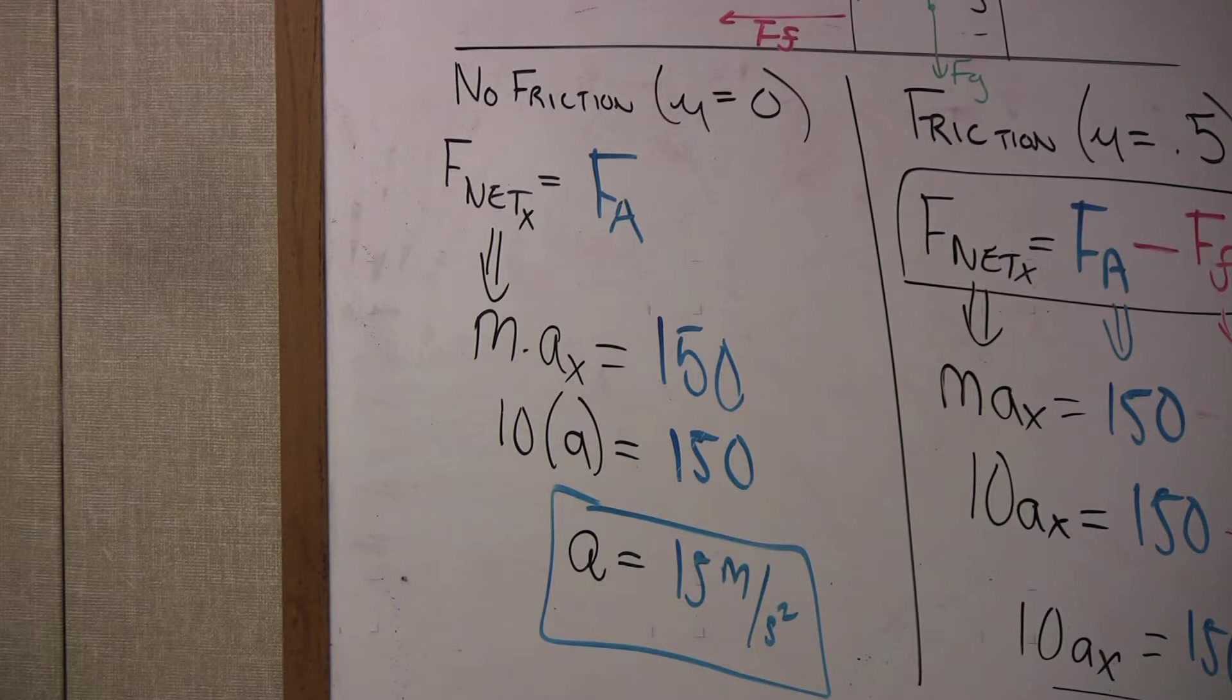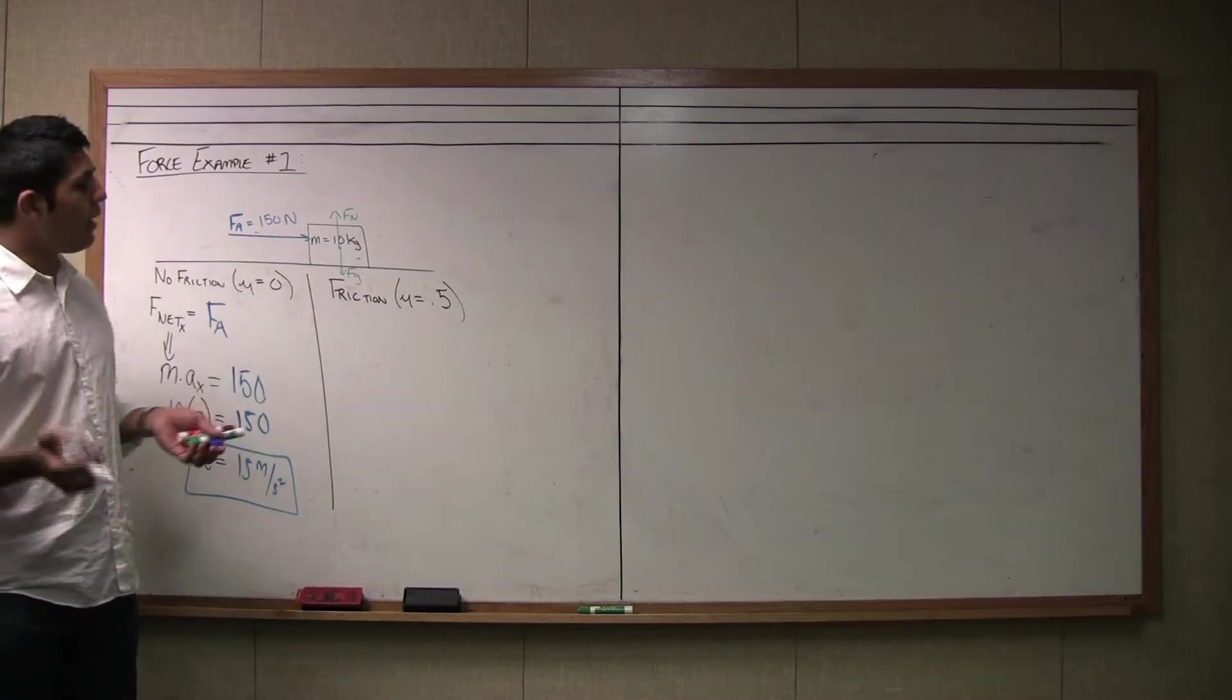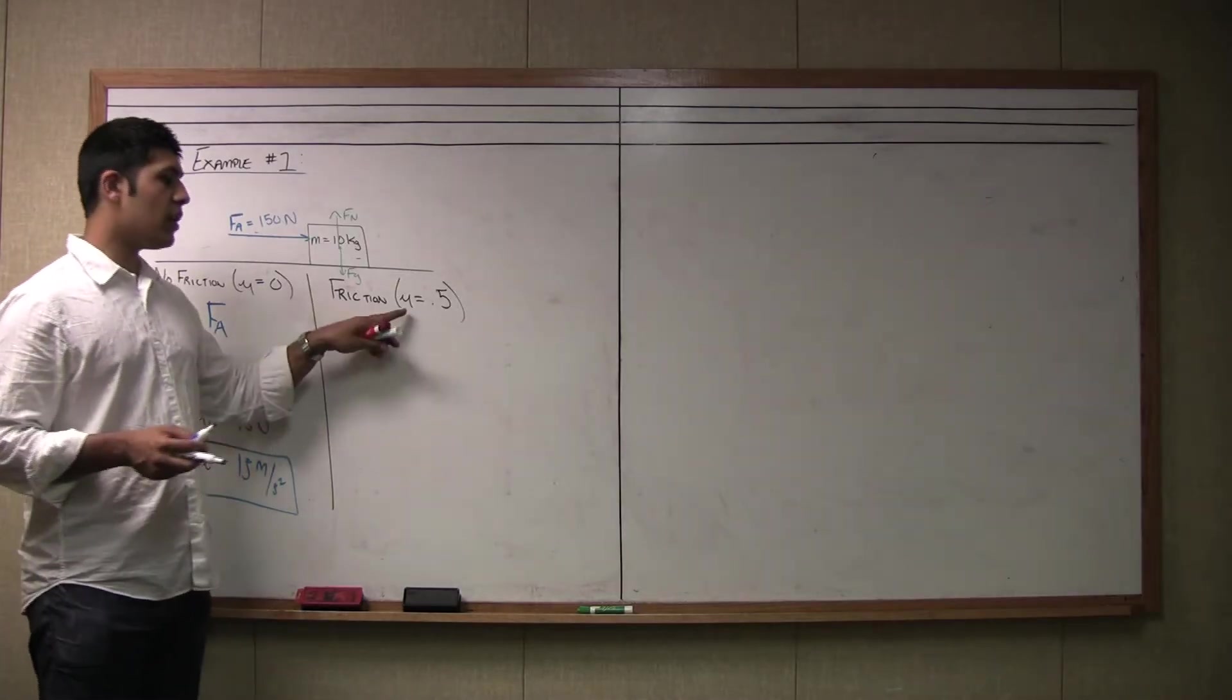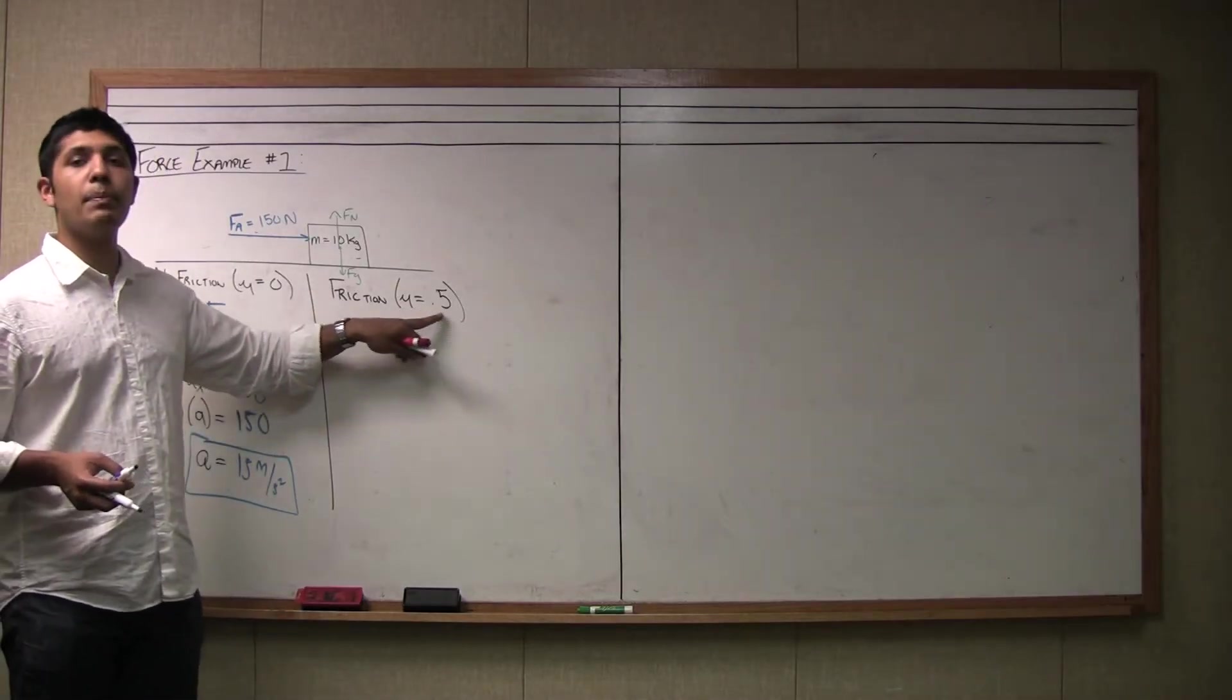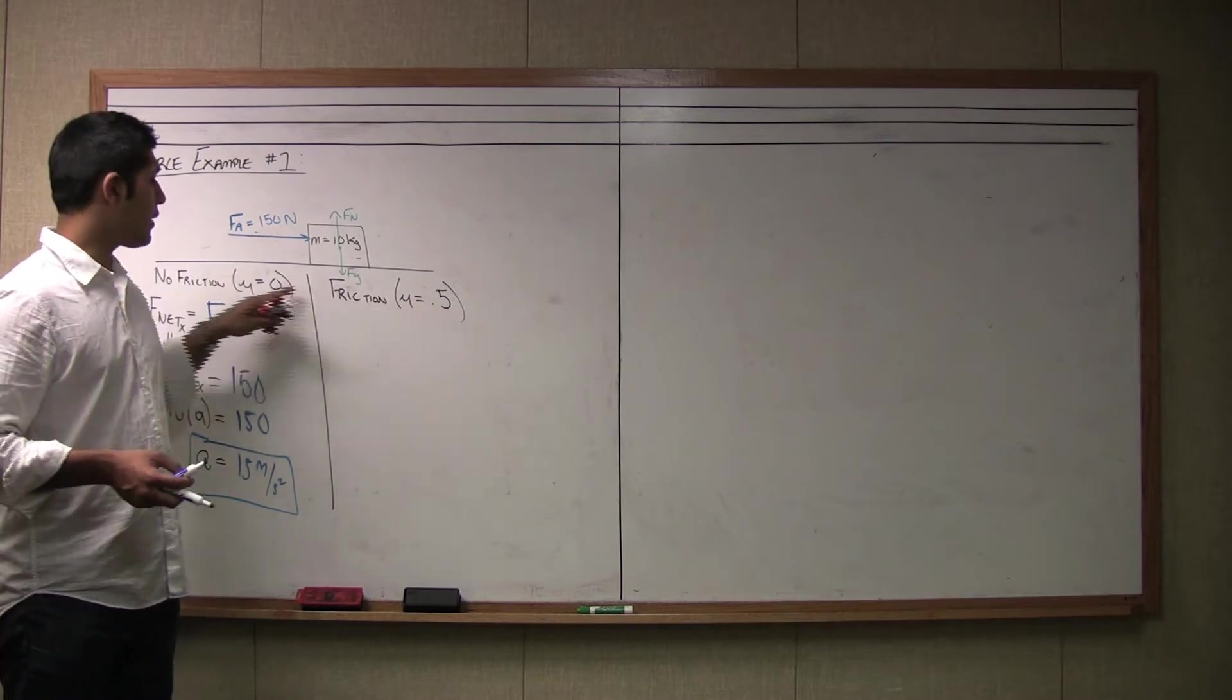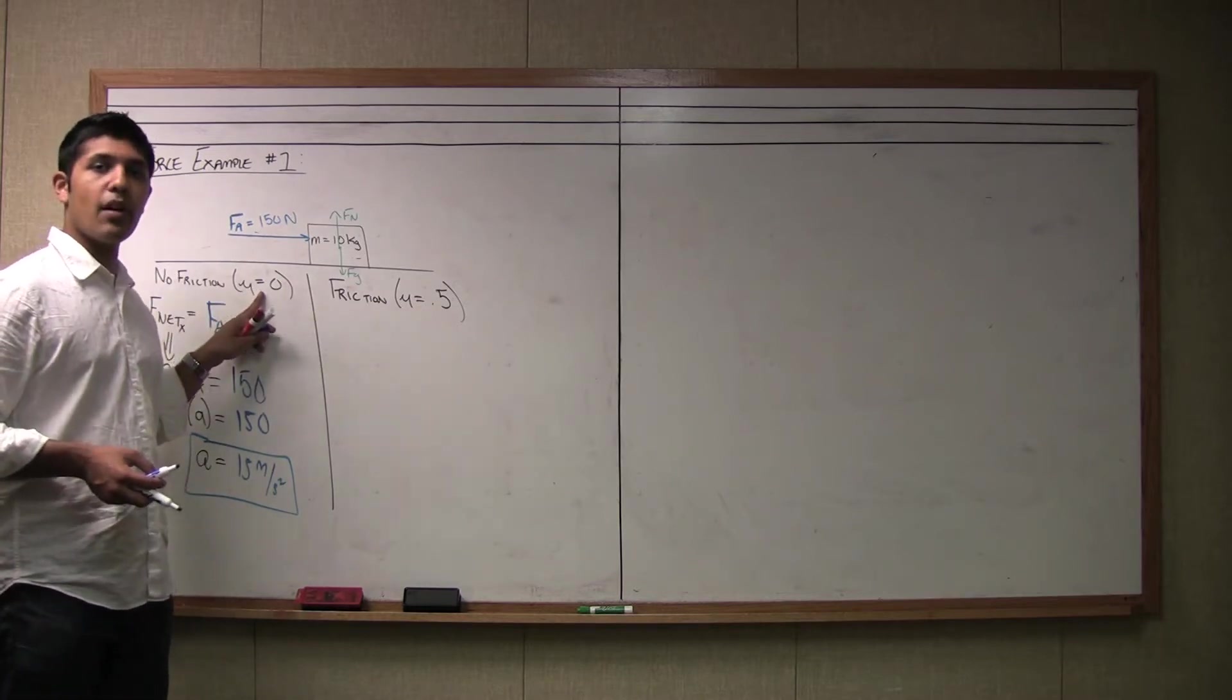Therefore the acceleration is going to be equal to 15 meters per second squared. So in a frictionless case here, we got the acceleration to be 15 meters per second squared. Now I am going to show you a case where the coefficient of friction is going to be 0.5 which is different than the previous 0 value that we had.